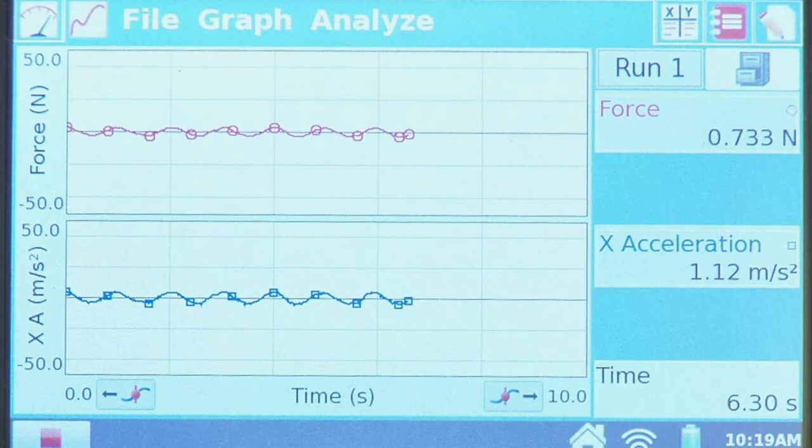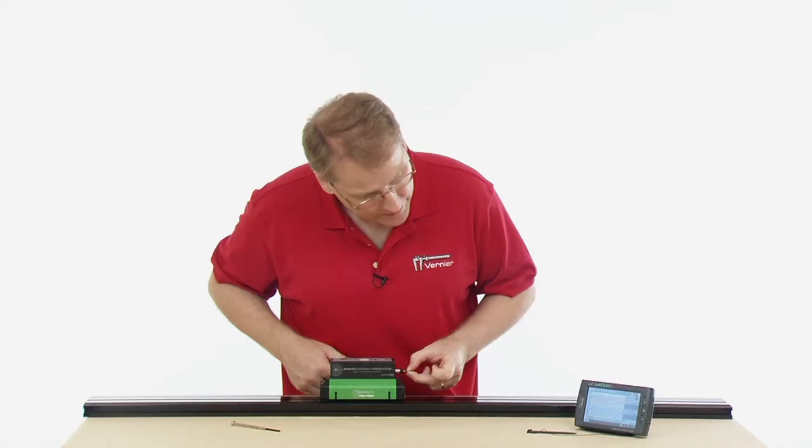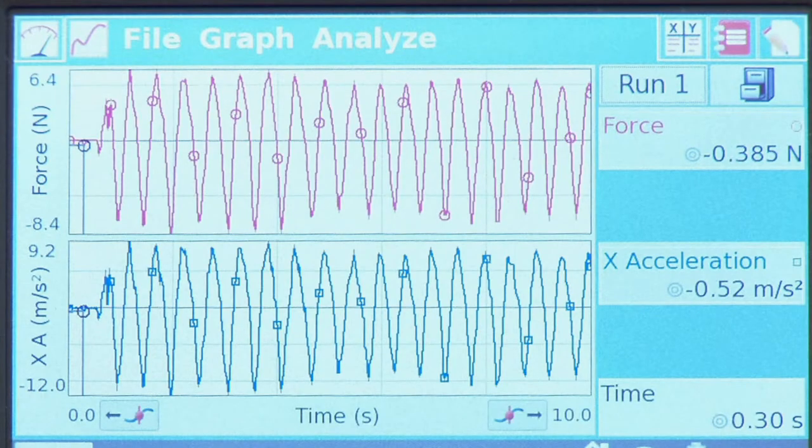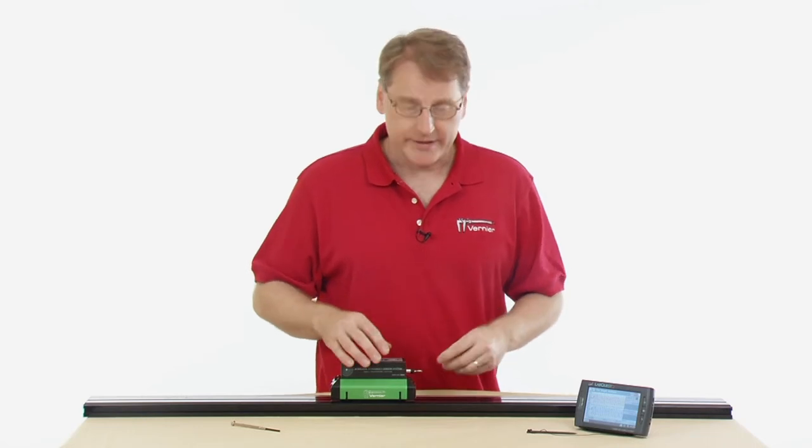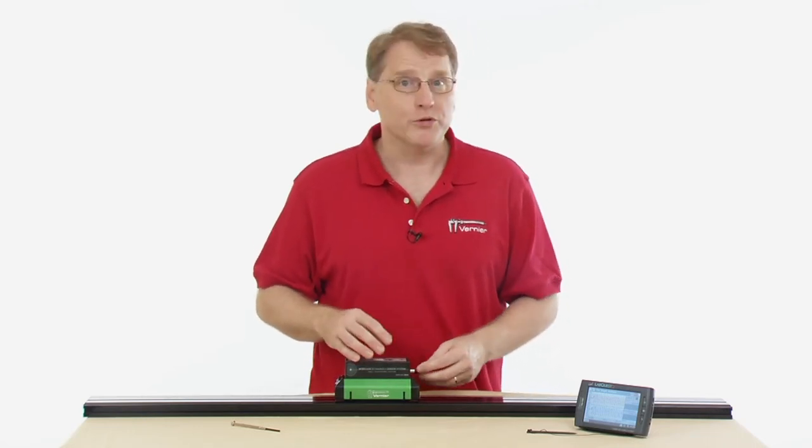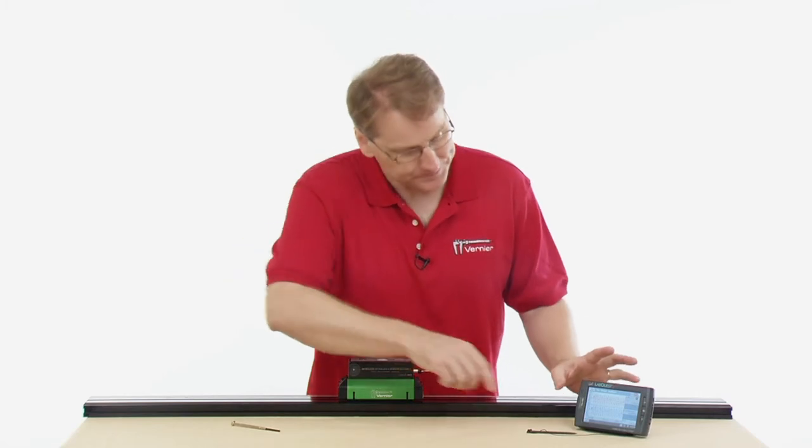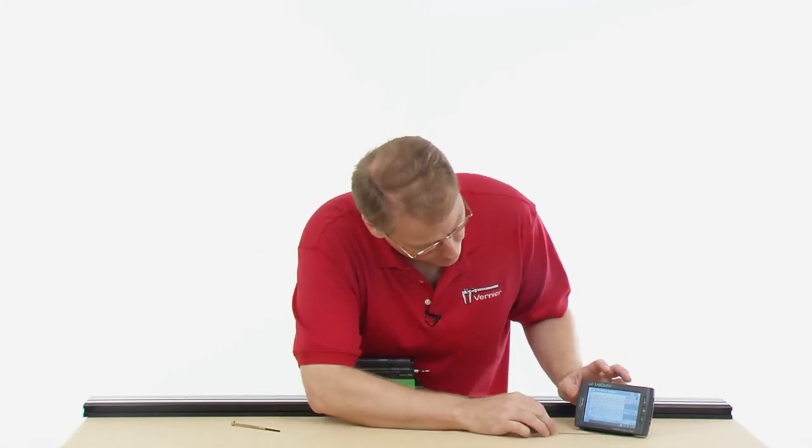So we have our two graphs there. We see on the upper graph, we have the force graph, and the lower graph, we have the acceleration graph. Interesting to note that they are in phase. We say that force is directly proportional to acceleration. Maybe there's a relationship there. That's what we end up with here.